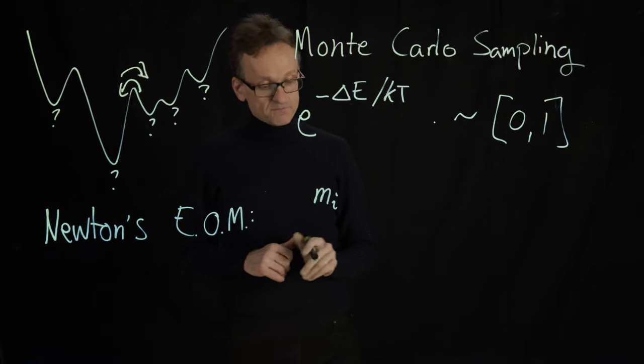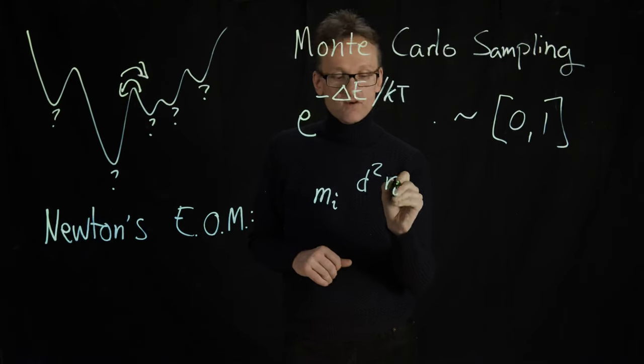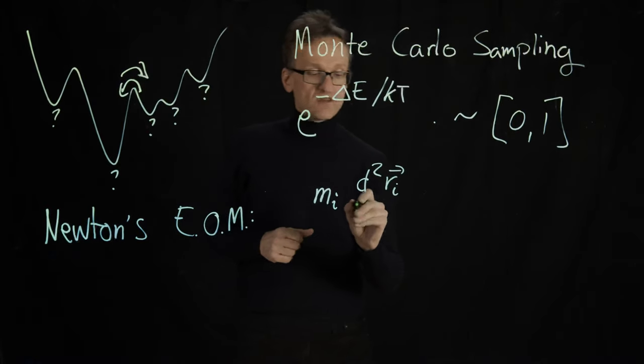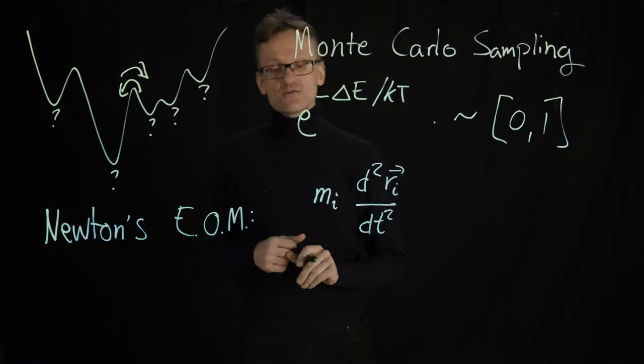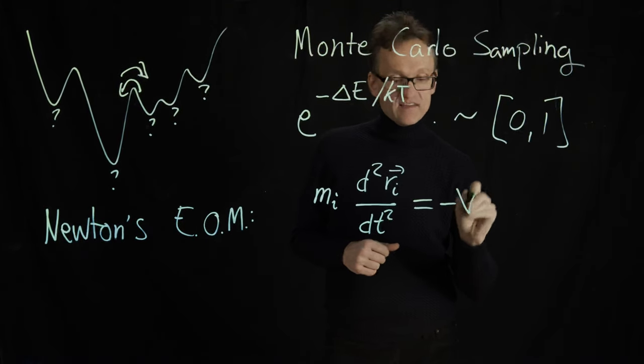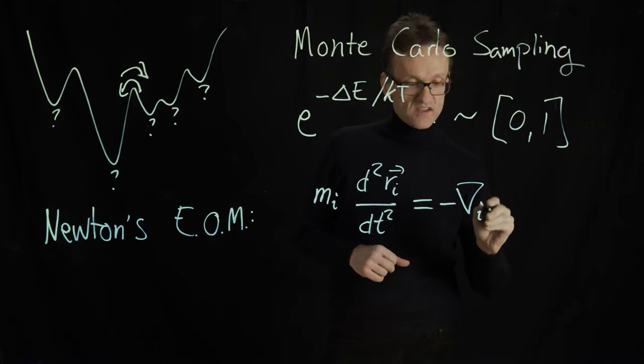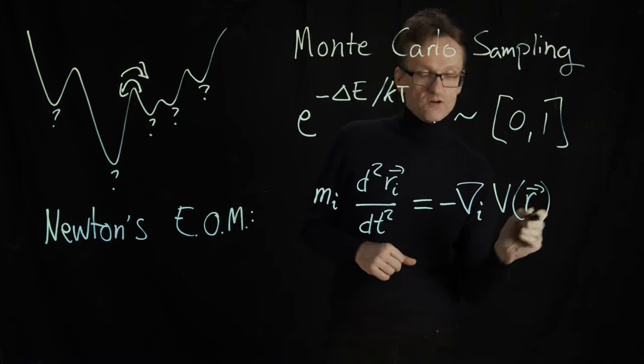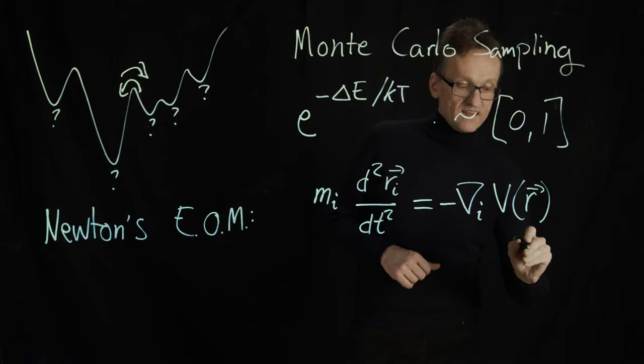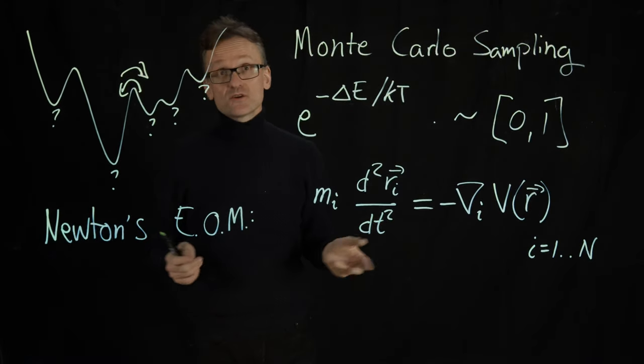If I write that slightly more formally for a large system, I have the mass of an atom i multiplied by the second derivative of the vector of that atom. That is x, y, and z coordinates for it. With respect to time. That is the acceleration. So this should be the force. And the force in that atom is the gradient taken with respect to those atomic coordinates of the potential V. That is a function of all the atoms in the system. And then i here goes from 1 to N where N could be a quarter of a million or something.